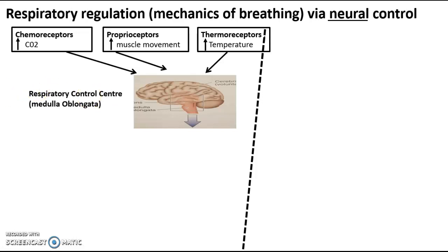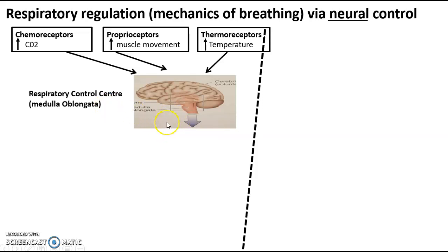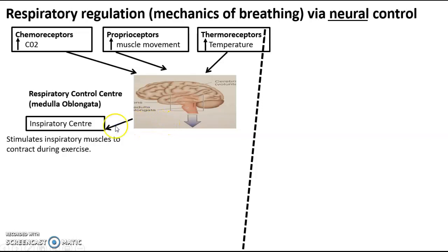It can't be the cardiac control centre because that's heart rate. It can't be the vasomotor control centre because that's vascular shunt. Now it goes into the respiratory control centre that is located in the medulla oblongata, next to the two previously mentioned control centres. Now from this point, we breathe in before we breathe out. So the first thing that happens when we start exercising is those receptors send the information to the respiratory control centre, and this respiratory control centre first stimulates the inspiratory centre, which is solely responsible for inspiring or inspiration.